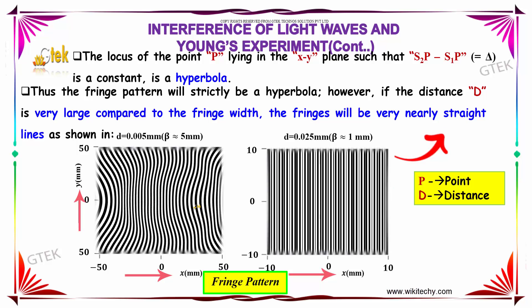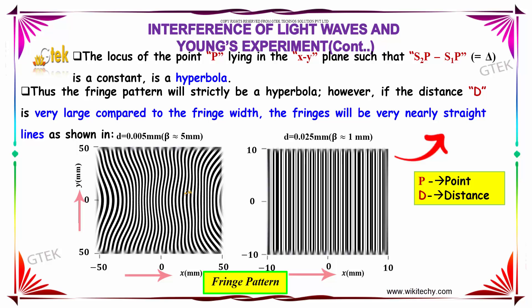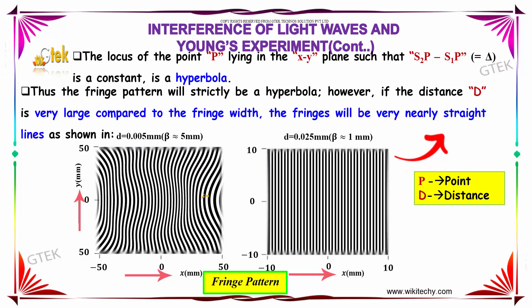If the distance D is very large compared with the fringe width, the fringes will be very nearly straight lines.